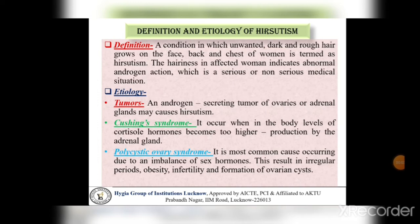Definition and Etiology of Hirsutism. Definition: A condition in which unwanted, dark and rough hair grows on the face, back and chest of a woman is termed as hirsutism। Hirsutism में ऐसी condition होती है जिसमें woman के face, back और chest में unwanted, dark और rough hair की growth होने लगती है। The hairness in affected women indicates abnormal androgen action, which is a serious or non-serious medical situation — it depends कि कितना ज़्यादा hair growth हो रहा है female की body में।